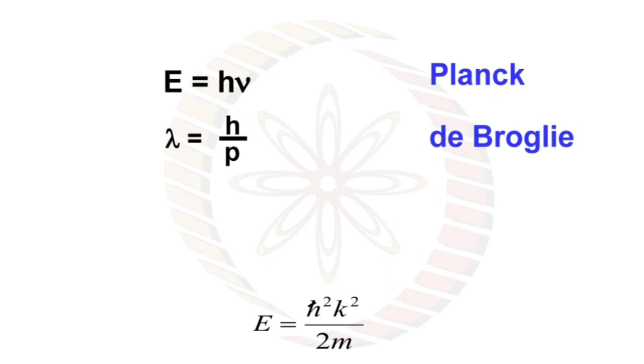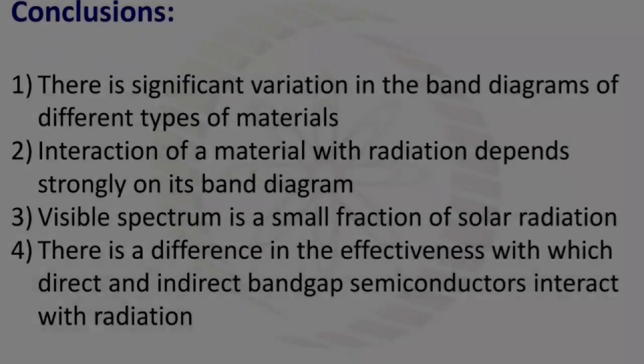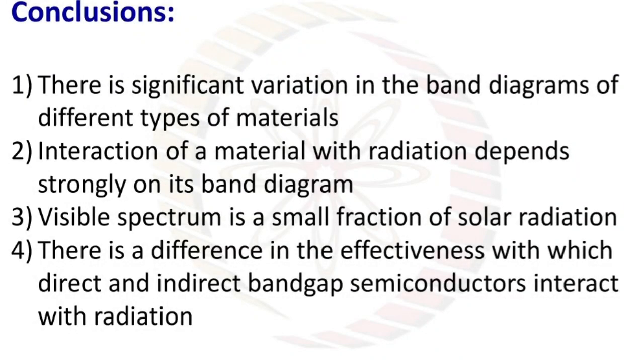Finally we can move towards some conclusions: there is significant variation in the band diagrams of different types of materials. Interaction of a material with radiation depends strongly on its band diagram. Visible spectrum is a small fraction of solar radiation. There is a difference in the effectiveness with which the direct and indirect band gap semiconductors interact with radiation.